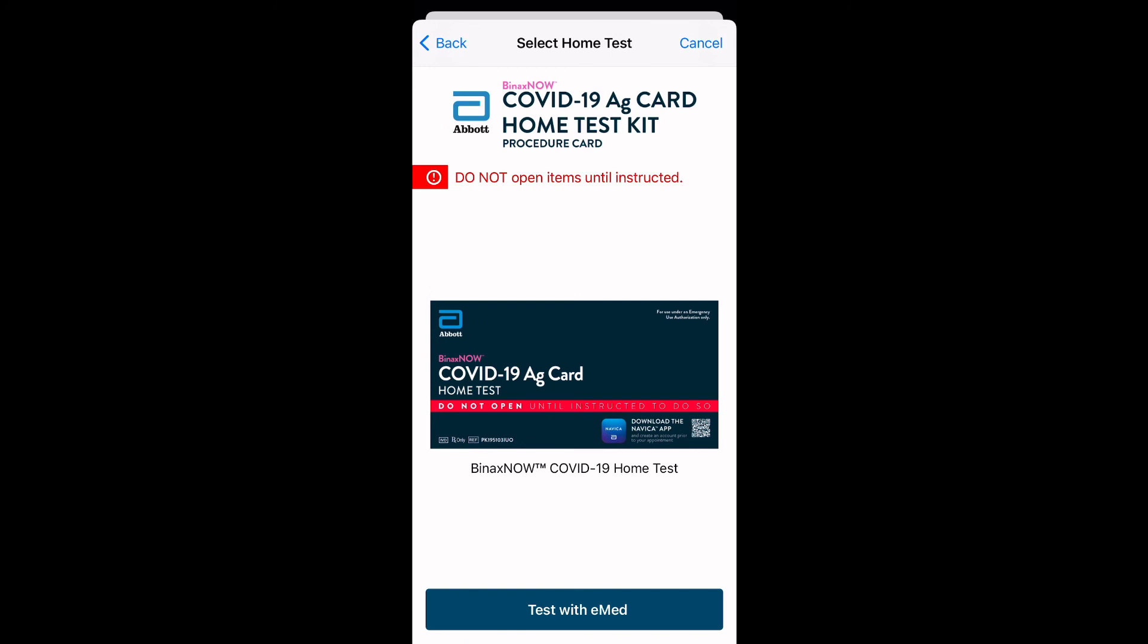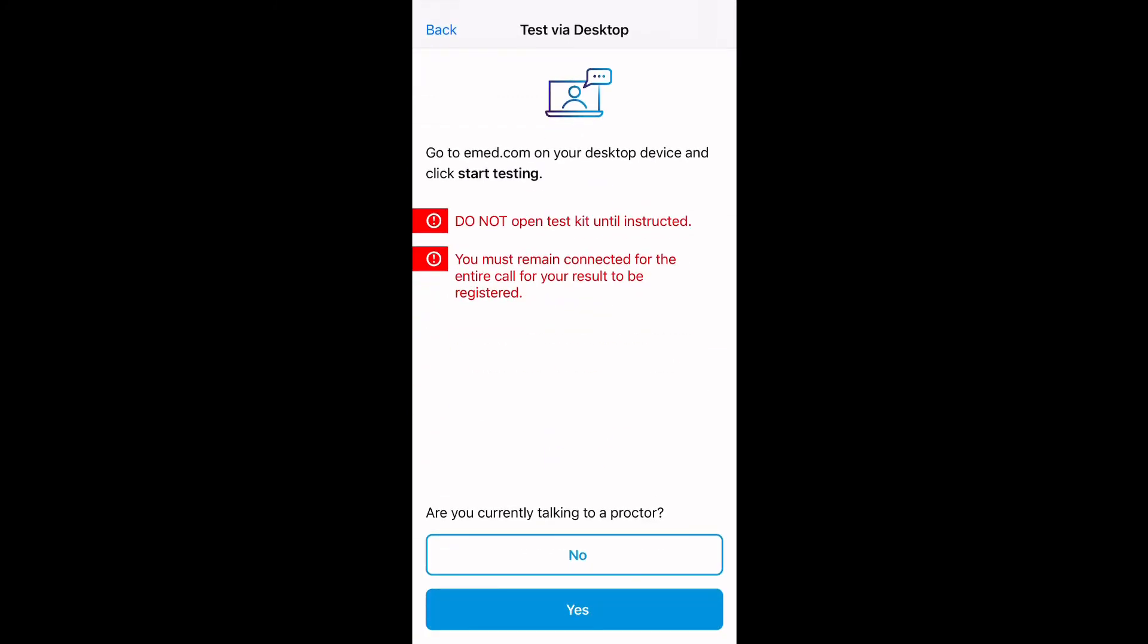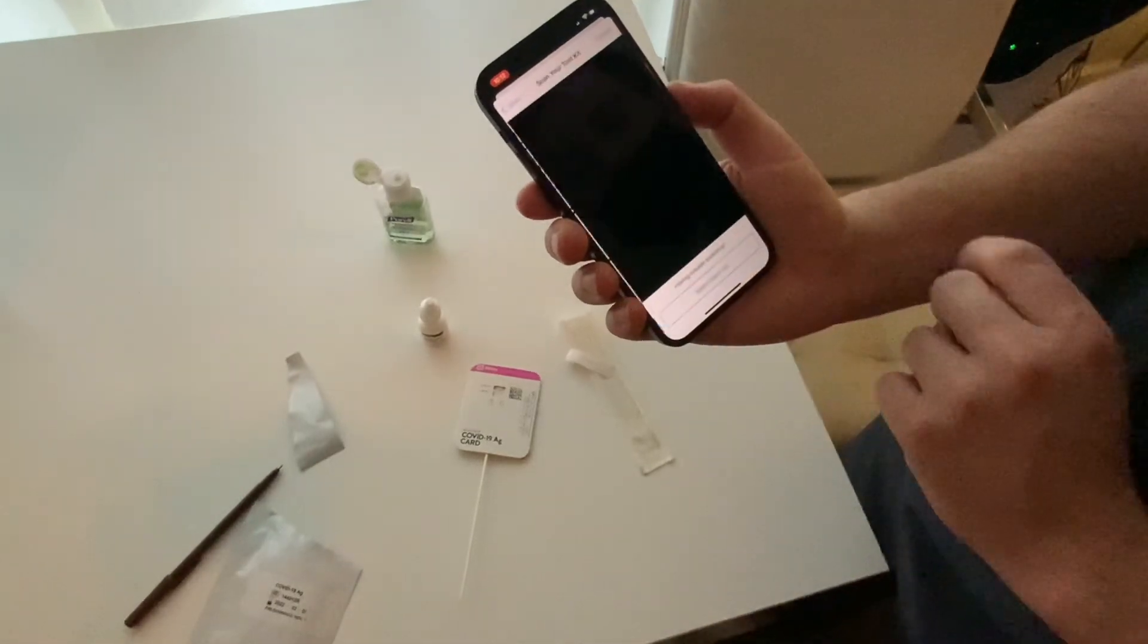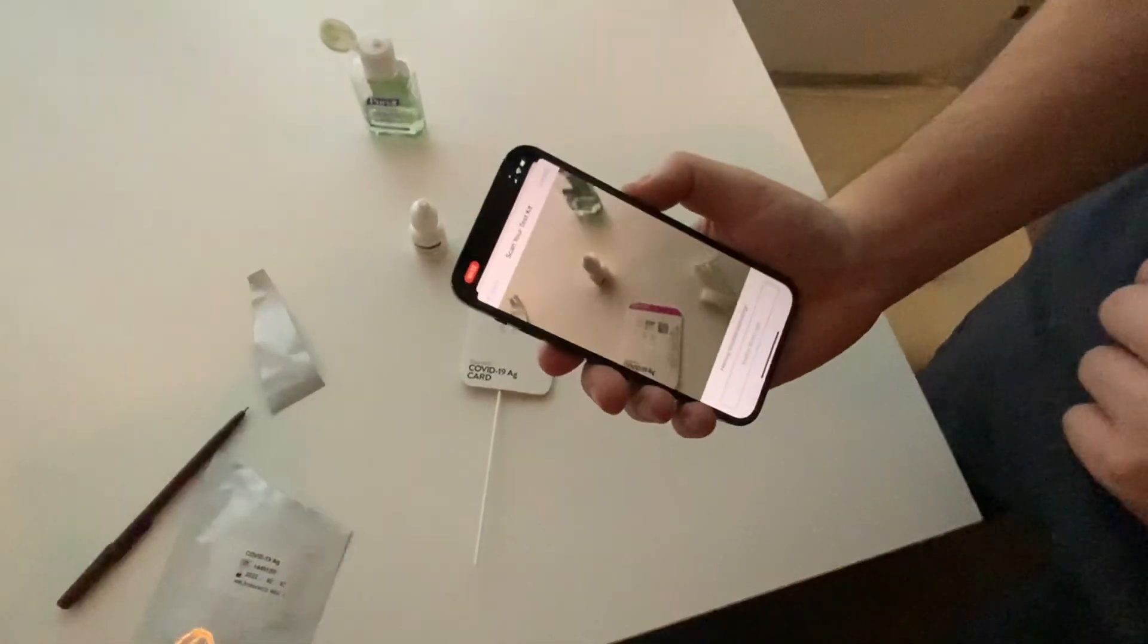And you can choose which one, of course. And it's really quite easy. Basically, you're just going to scan after you put your information in and you have your digital wallet there for your results. And that's pretty much it.